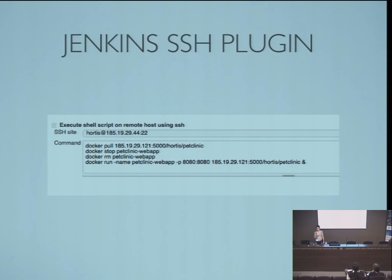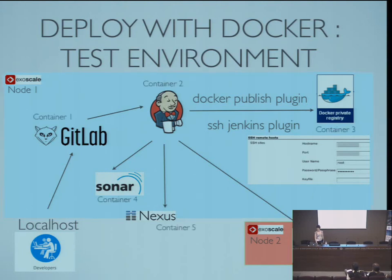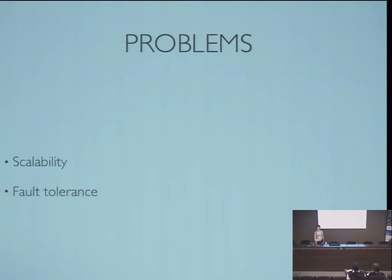This is the final architecture: two Exascale instances — one with the CI containers, and one where we deploy the Pet Clinic web app. The problems of this design are obvious: we have a scalability problem because we have just one node and cannot scale the app easily, and a fault tolerance problem because if the node fails, we stop the service.